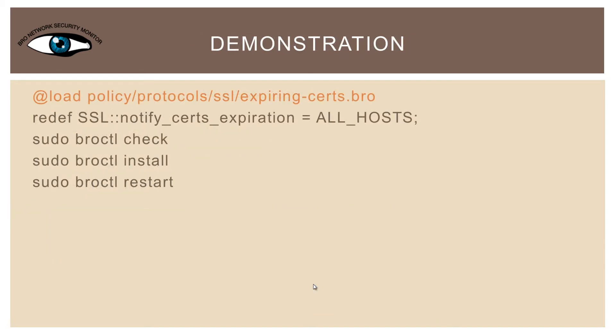First, a quick demonstration. We could simply load the appropriate script into our local.bro. At the end of our local.bro, configure which certificates we want to check, ask Bro to confirm our configuration is correct, ask Bro to install the current configuration, and then tell Bro to restart using the new configuration.